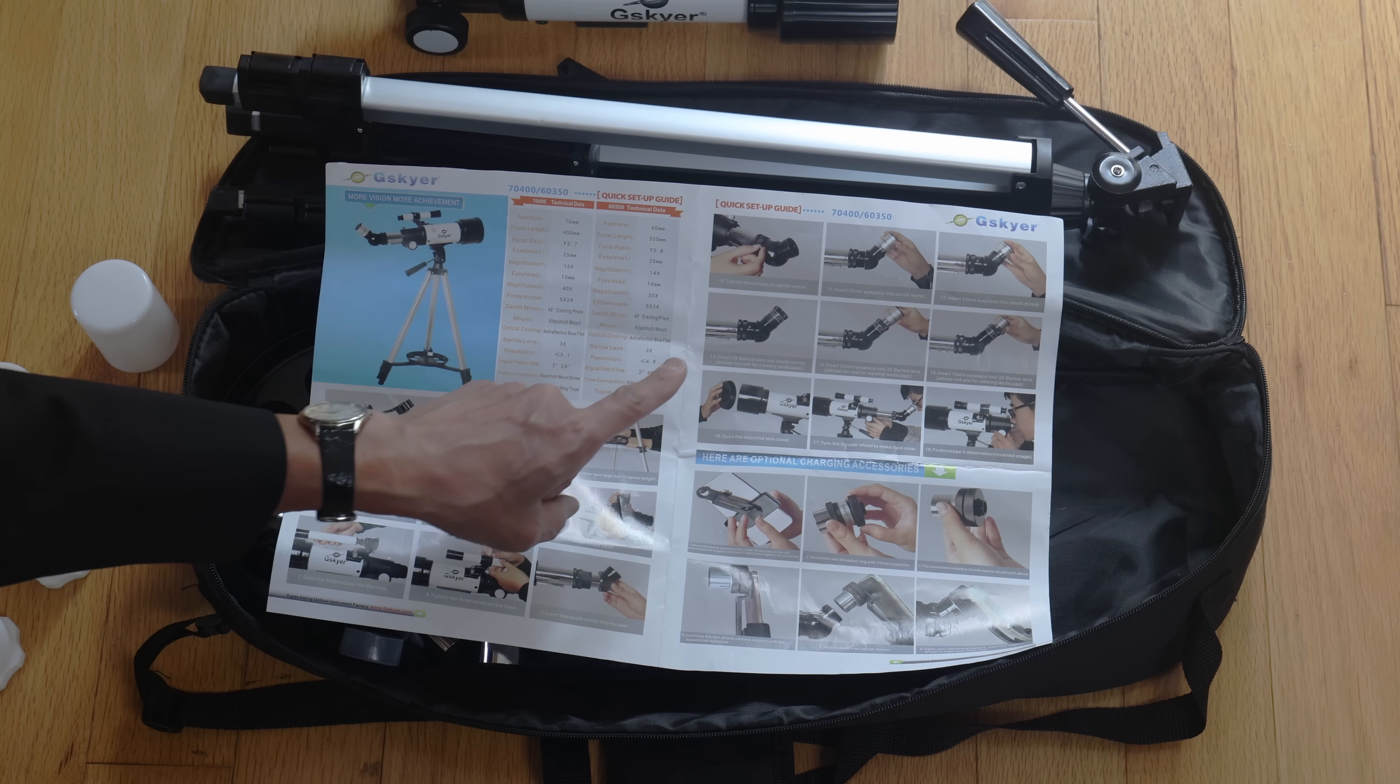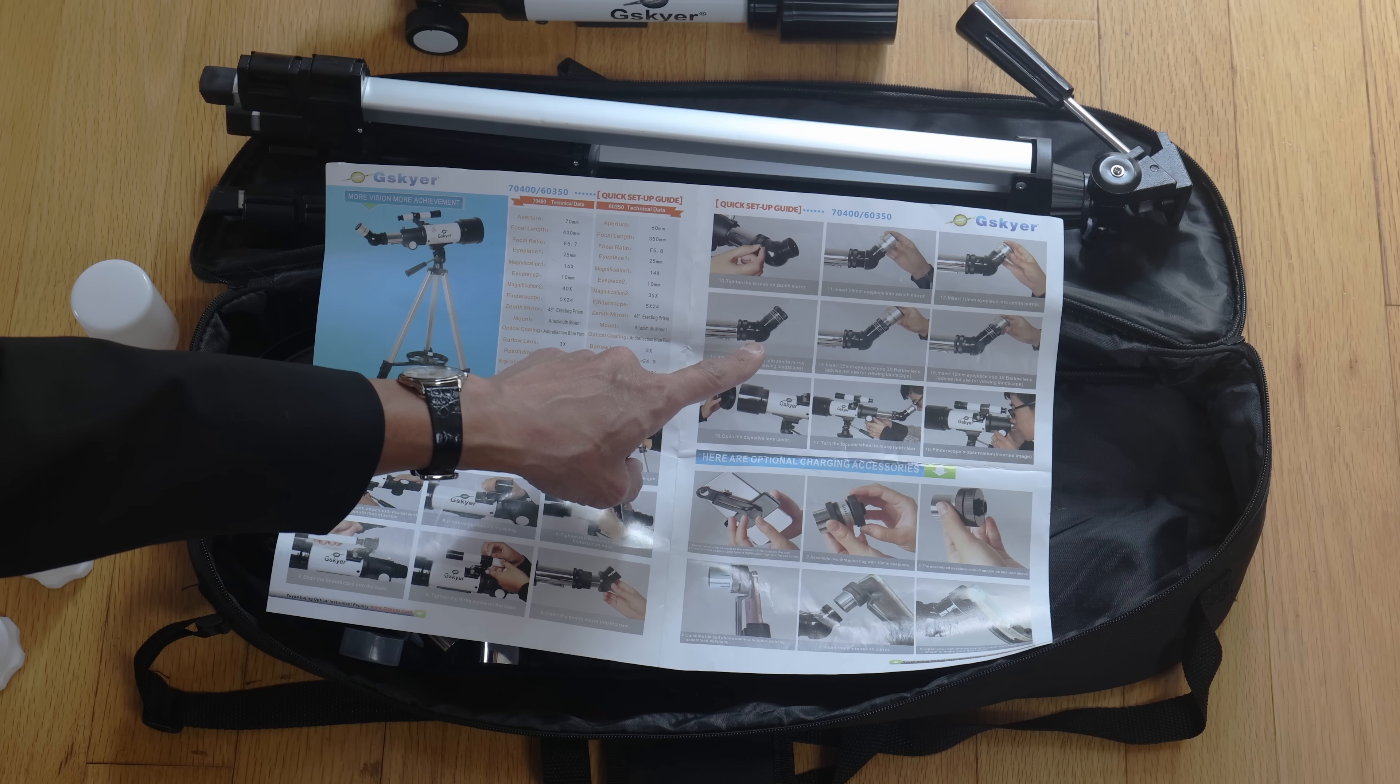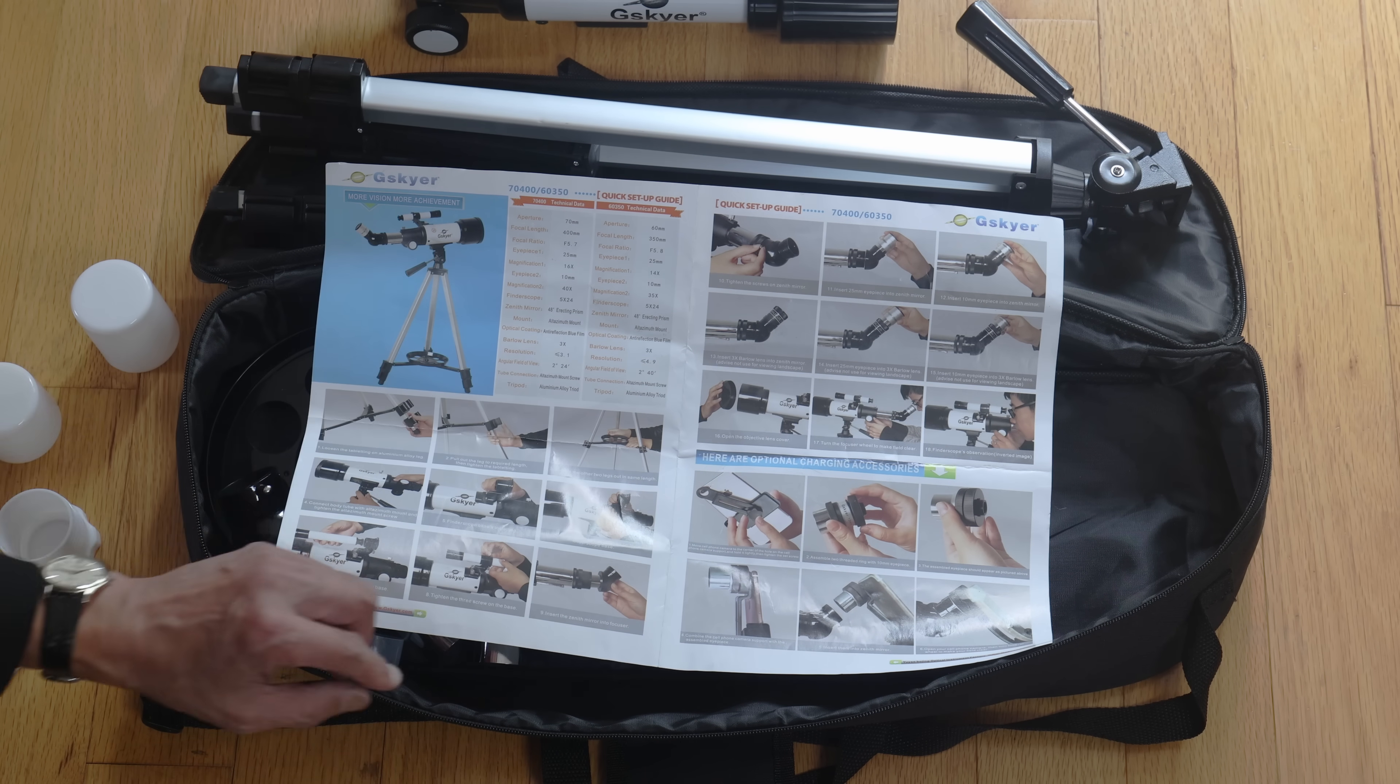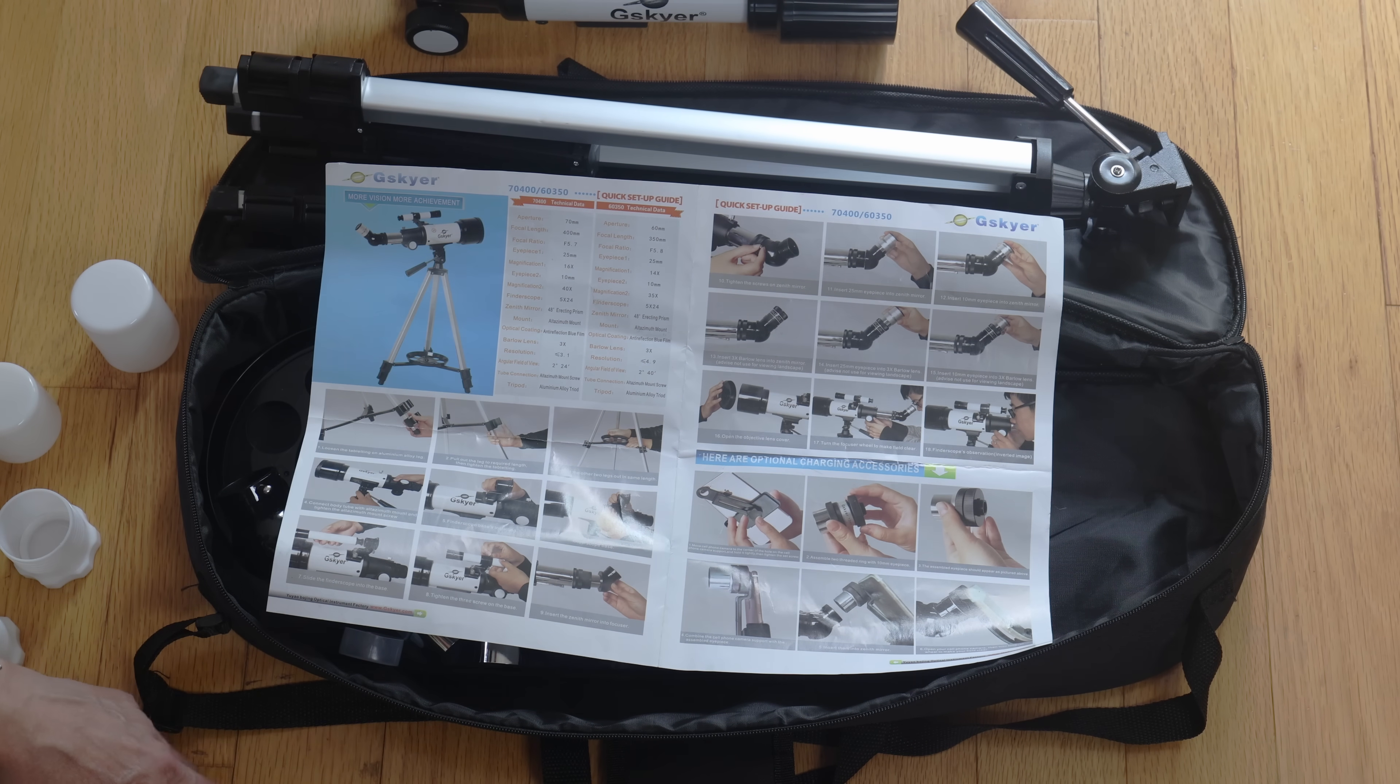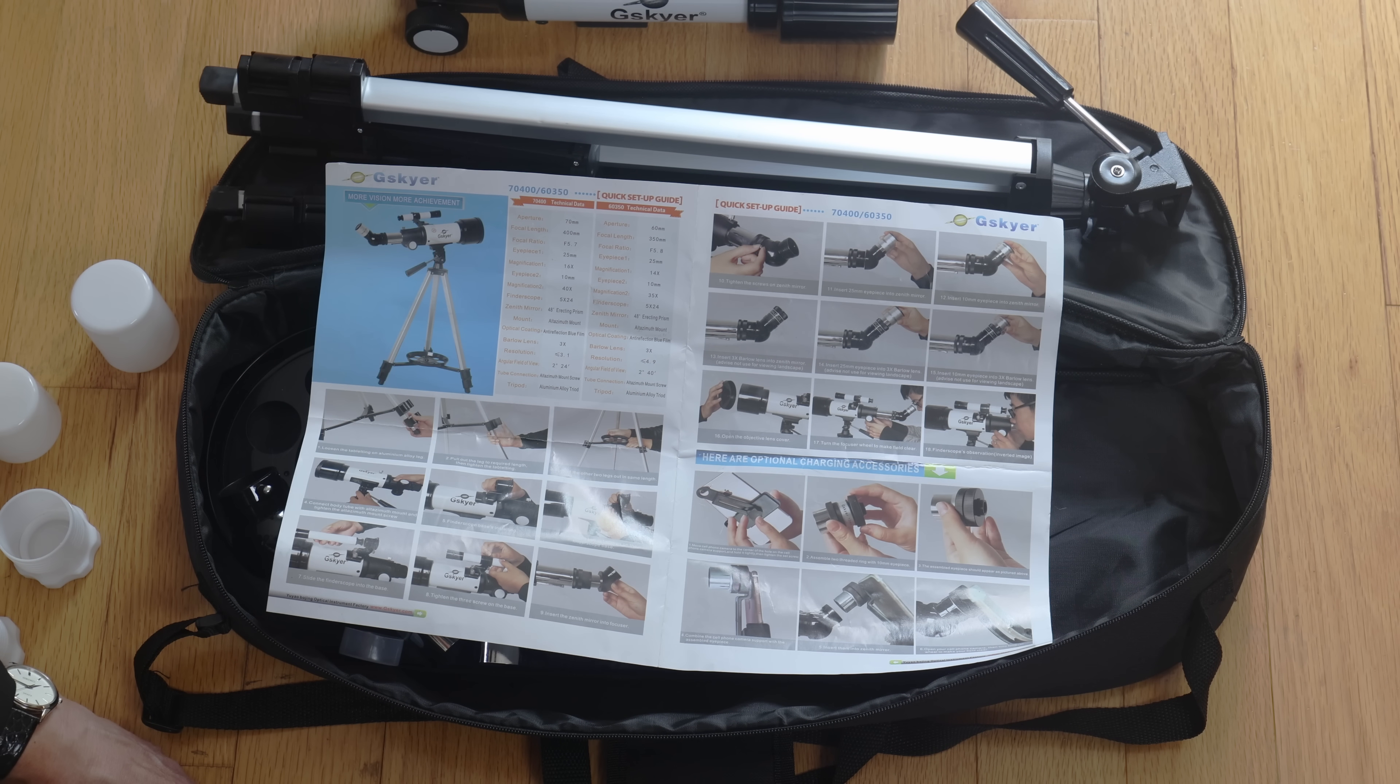And to use the cell phone adapter, it says, here are optional charging accessories. Don't know what that means either. So on the diagonal, if I'm reading this correctly, they're telling you to always use the Barlow lens. That is a dangerous piece of advice. If you know telescopes, you know that you should never use that thing, especially on a very cheap telescope.